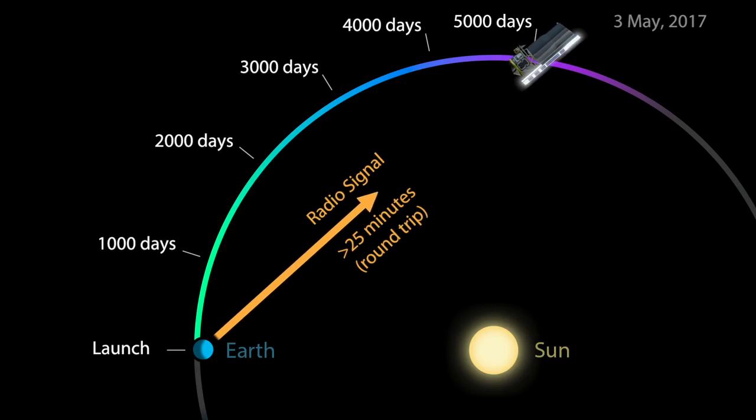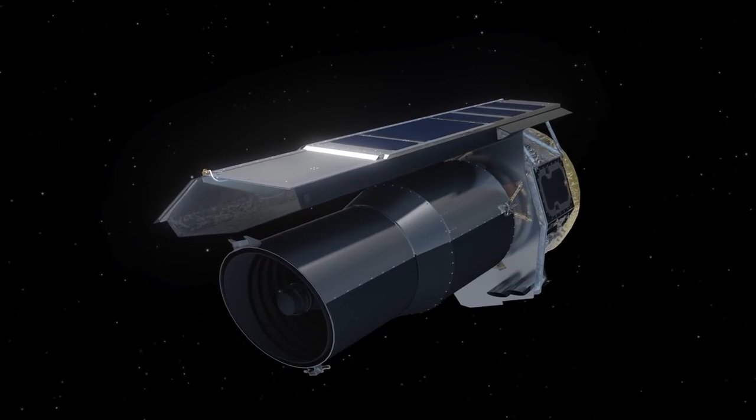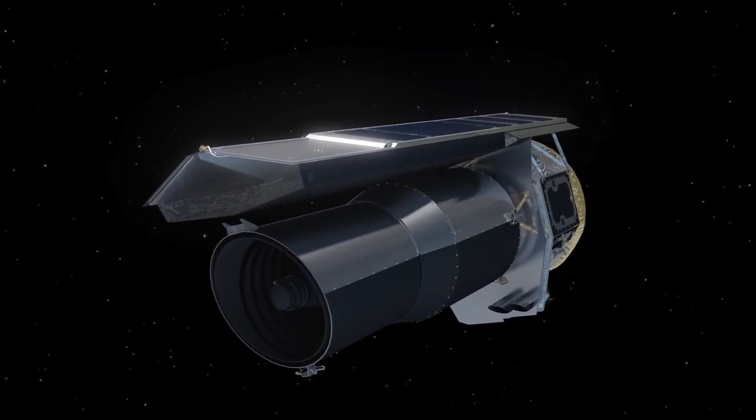Radio signals now take over 25 minutes to make the round trip. That's why Spitzer, like any good robot, needs to work independently from its human operators.